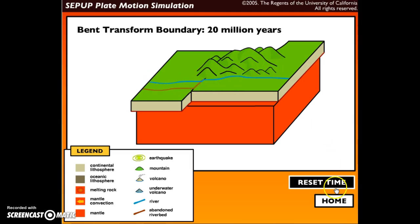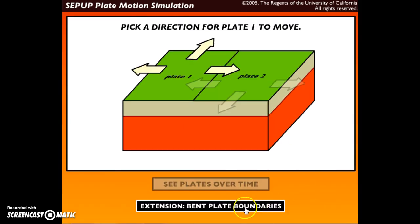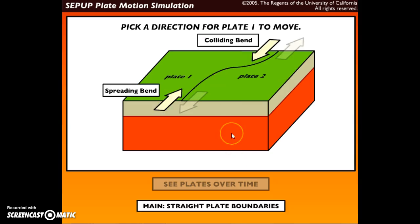Now the next one we're going to look at is still the bent plate boundaries and still the transform fault boundary, but it's going to be the spreading bend.